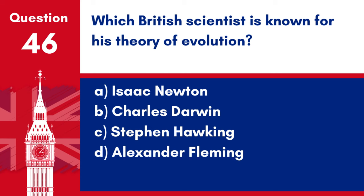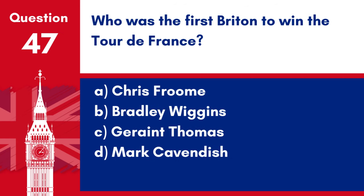Question 46. Which British scientist is known for his theory of evolution? a. Isaac Newton. b. Charles Darwin. c. Stephen Hawking. d. Alexander Fleming. Answer: b. Charles Darwin. Charles Darwin is renowned for his theory of evolution by natural selection, outlined in his book On the Origin of Species, published in 1859.